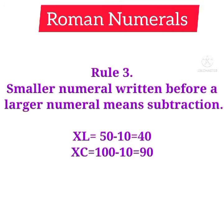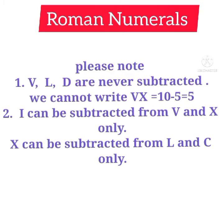Let's take a few more examples for Rule 3. XL: L stands for fifty and X stands for ten, so fifty minus ten equals forty. XC: C stands for hundred and X stands for ten, so hundred minus ten equals ninety.